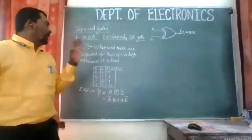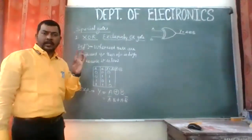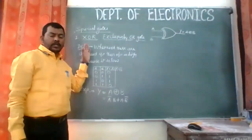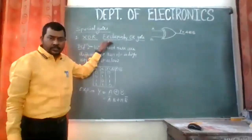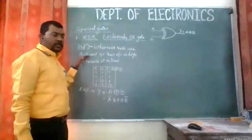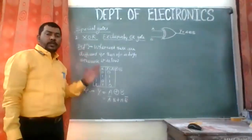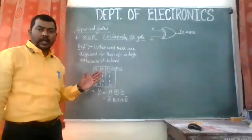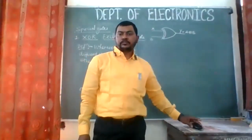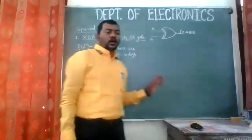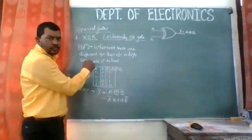We have studied five gates: three basic gates and two universal gates — NAND and NOR. The sixth gate is the first special gate, the XOR gate, which we call the Exclusively OR gate. The definition is: whenever different inputs are given to a gate, the output is high; otherwise it is low. For the same input, the output is low.